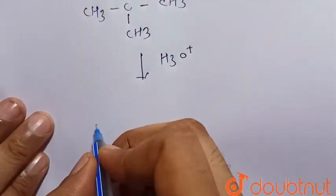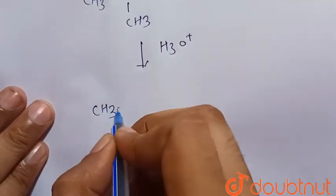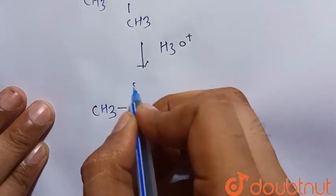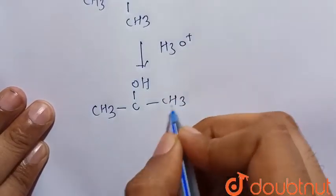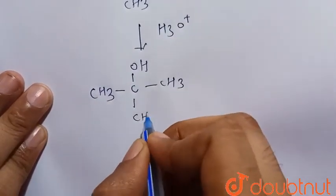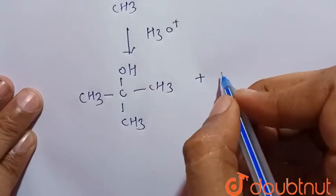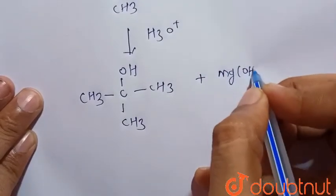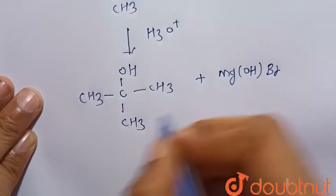There is the formation of tertiary butyl alcohol, that is CH3-C(OH)(CH3)-CH3, and the side product Mg(OH)Br is also formed, but this is our major product.